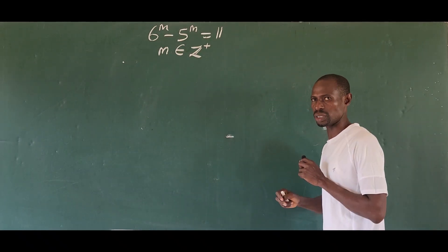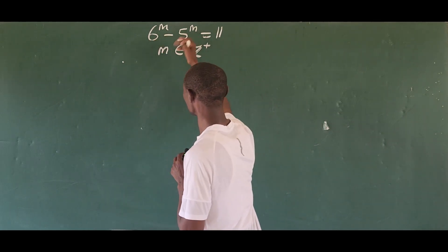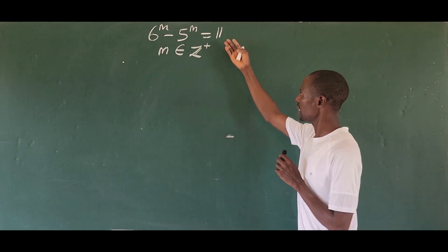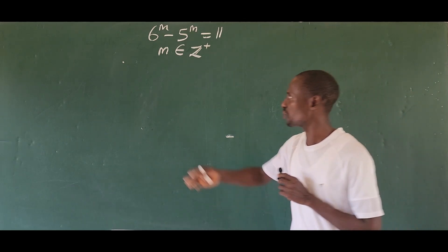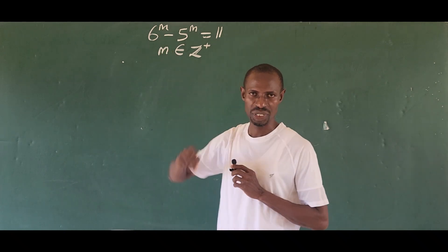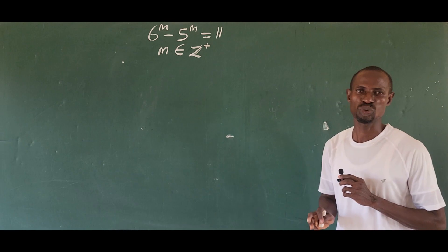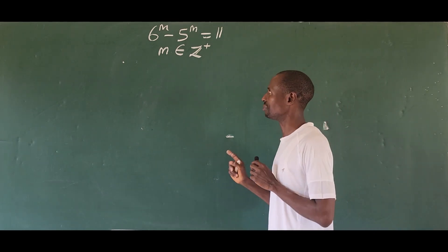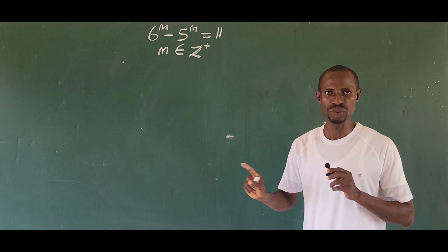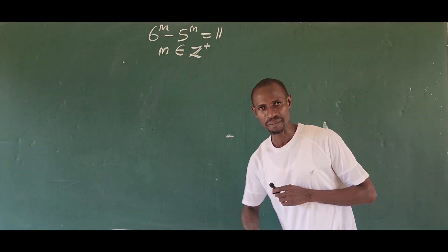And so we increase it to one. So if here is one and here is one, this will give us six minus five. And that will give us one. But here we have eleven. What if I decide to put in two here? That will give us six to the power of two, which is 36, and five to the power of two, which is 25. And 25 away from 36, that will give you 11. And so two is the value of m that will actually satisfy this challenge here.